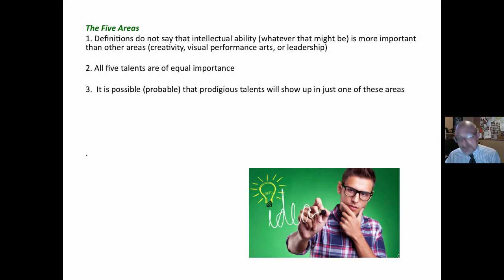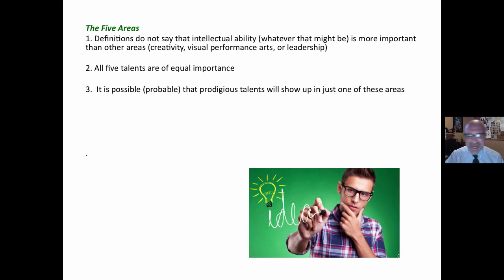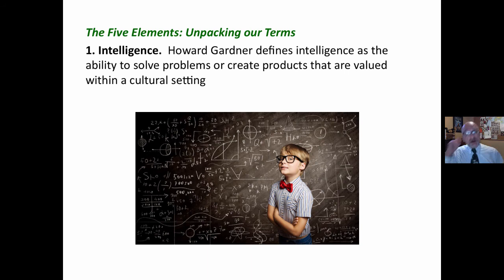That is important: all five talent areas are of equal importance. Looking closely at the definitions, it is possible and indeed probable that prodigious talent will show up in just one of these areas. So you could have a gifted student in visual performing arts, or leadership, or one specific academic area — and that's why we're looking at reading today.